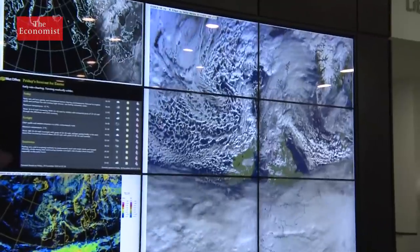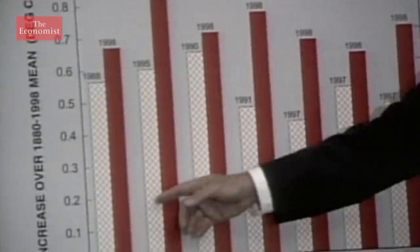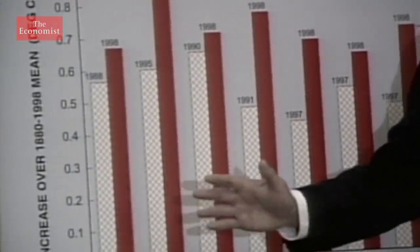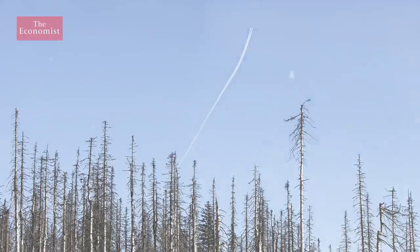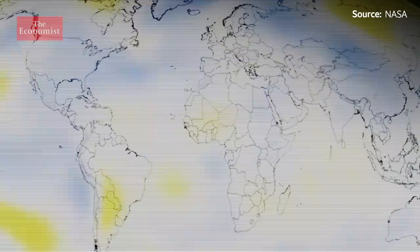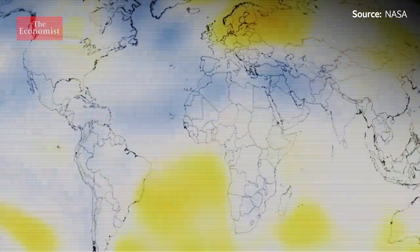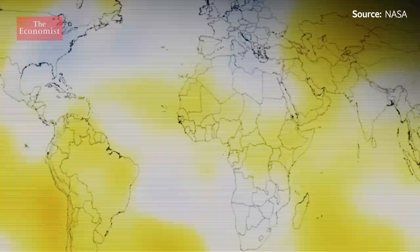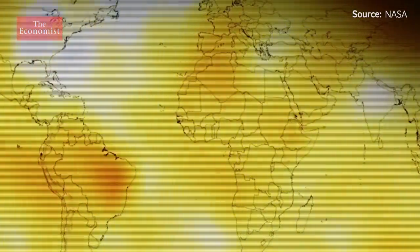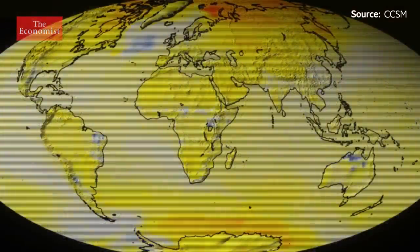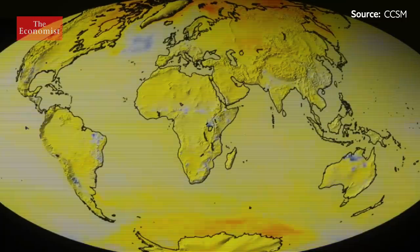And that allows you to inform policy to some extent. One of the classic things that climate models have always done is just look at the world if the carbon dioxide level were twice as high as it is today. That was one of the first ways that climate models began to illustrate the fact that greenhouse warming really was likely to be a problem in the 21st century.